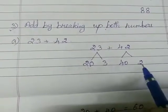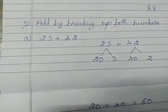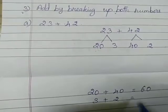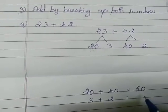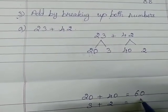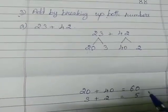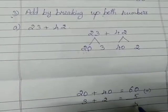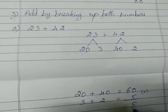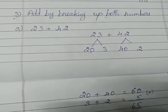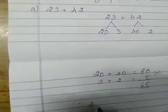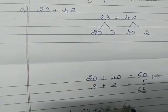Then take and write the 1s value: 3 plus 2 equals 5. You can add directly: 0 plus 5 is 5, and bring down the 6. So 23 plus 42 equals 65.